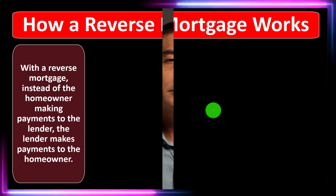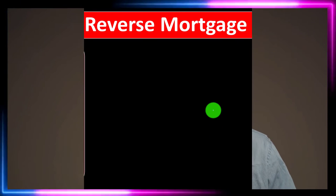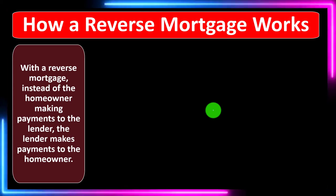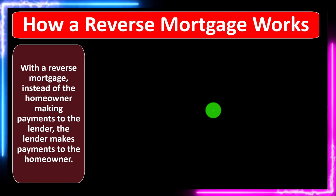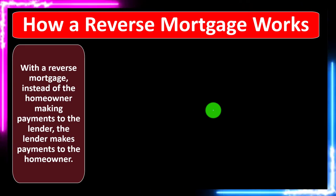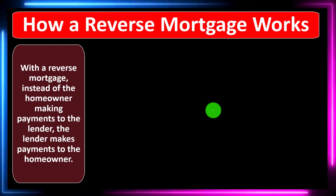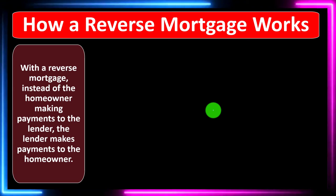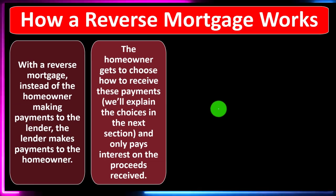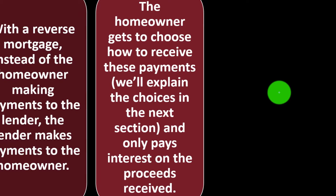How a reverse mortgage works: with a reverse mortgage, instead of the homeowner making payments to the lender, the lender makes payments to the homeowner. Instead of paying down the loan, the loan is actually going up, which means the difference between the home value and the loan is getting smaller instead of bigger. You'll have less equity as the bank pays you, making it the reverse of the norm. The homeowner gets to choose how to receive these payments.